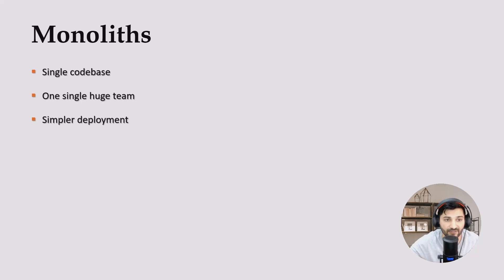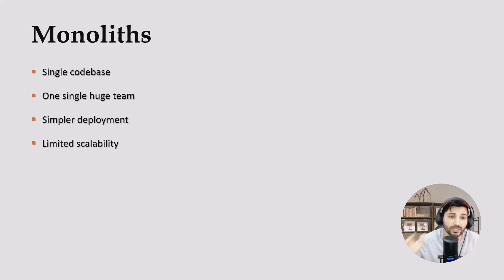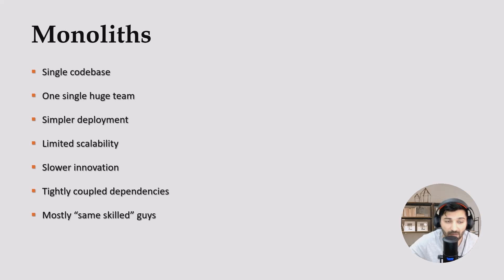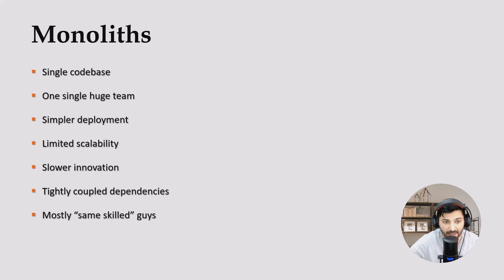We have simpler deployment — essentially one main artifact to deploy. We have limited scalability; you can use interfaces and abstract classes, but in general scalability is limited. We have slower innovation — when you make small changes, the entire application must be re-deployed. We have tightly coupled dependencies where all layers communicate directly with each other. And in monolith we mostly have the same skill set — for example, in a C# Web API, all back-end developers need to know ASP.NET.